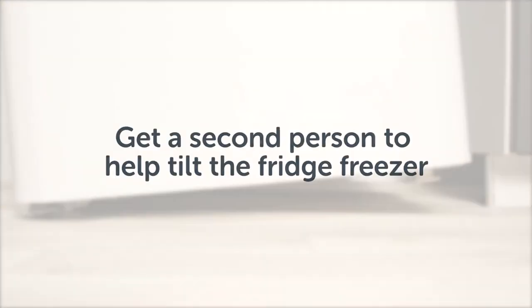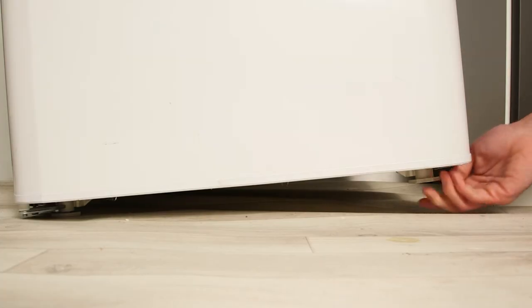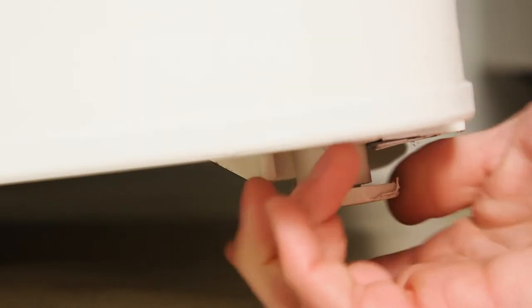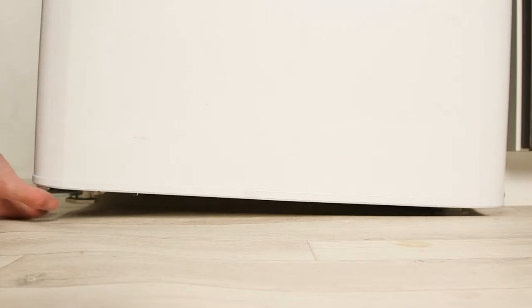To correctly level your fridge freezer get a second person to assist in tilting the appliance one way. Rotate the feet clockwise to heighten and anti-clockwise to lower. Gently lower the fridge freezer and repeat on the other side.